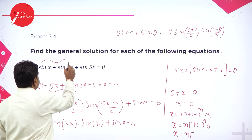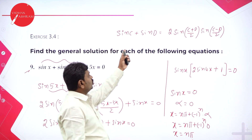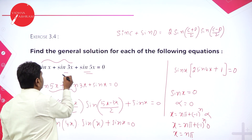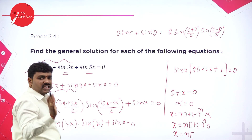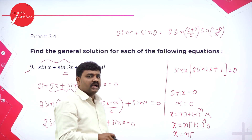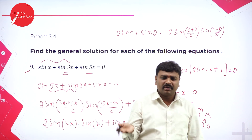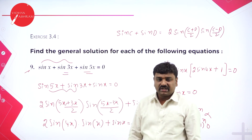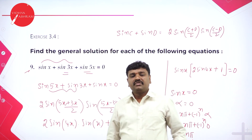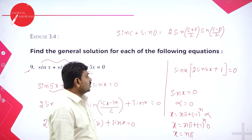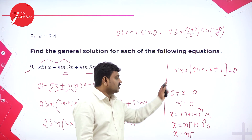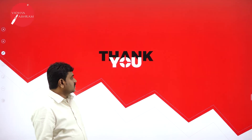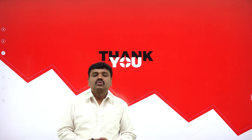Here we used sin c plus sin d equals 2 sin((c+d)/2) into sin((c-d)/2). First I arranged in order: 5, 3, 1 — addition is commutative so you can rearrange. I clubbed the first two terms, used sin c plus sin d, took sin x common, and obtained the product of two factors equal to 0. Equate each factor to 0: sin x equal to 0 gives one set of solutions, and the other gives the second set. By this I conclude general solutions.